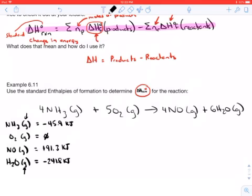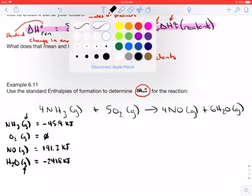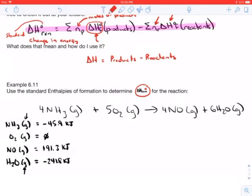All right so let's check this out. So now we're just going to set it up products minus reactants. And what I like to do when I write this out I write it out in this manner. Although you can write it out however you like. So I take delta H and remember it's products minus reactants.